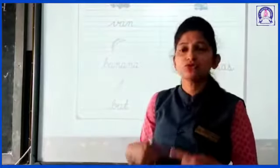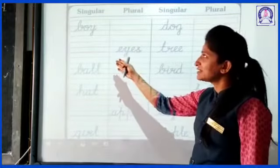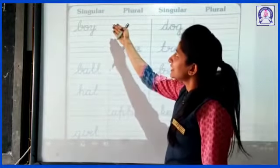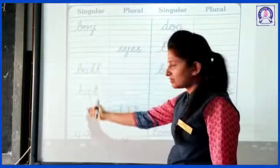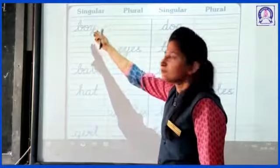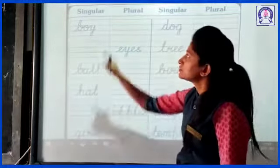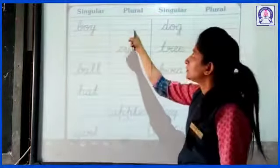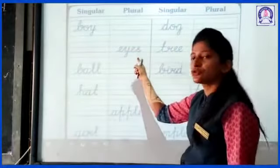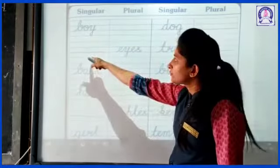Isi tarah main aapko doosri exercise bhi dikhata hoon. See, our next exercise. Yahan par singular aur plural ki columns di gayi hain — which is singular form and which is plural form.